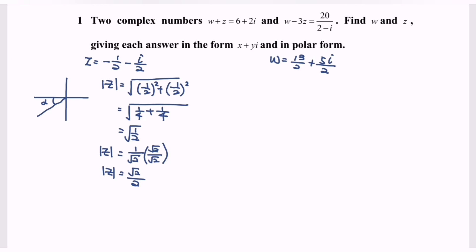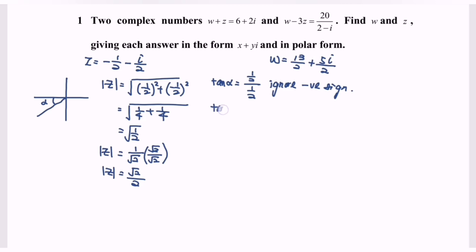Next, find the argument of z. Tangent alpha equals y over x. Here y equals negative 1 over 2 and x equals negative 1 over 2, so we have (1 over 2) divided by (1 over 2). Remember to ignore the negative signs when finding the basic angle. So tangent alpha equals 1, giving basic angle alpha equals 45 degrees.